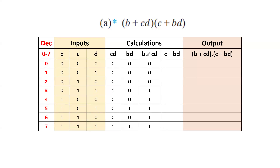Next we find b+cd — that is B ORed with cd. B is the first column, cd is this column. We OR these two values: if one of the inputs is 1, the output is 1; when both inputs are 0, the output is 0. The first three combinations have output 0; for the remaining all combinations, at least one single 1 is available so the output is 1. In the same way, we find c+bd — C ORed with bd. We concentrate only on the C column and bd column. When both inputs are 0, the output is 0; otherwise the output is 1. In these cases only we have both 0s; in the remaining cases at least one 1 is there so the output is 1.